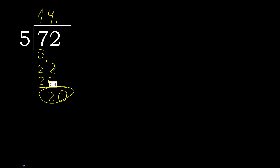5 multiplied by 4 is 20 — 20 is not greater. 20 minus 20 is 0. Therefore finish.